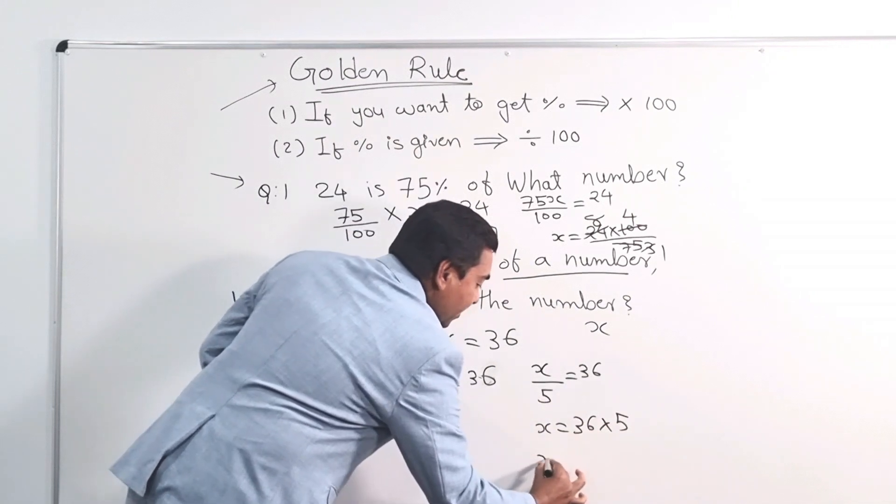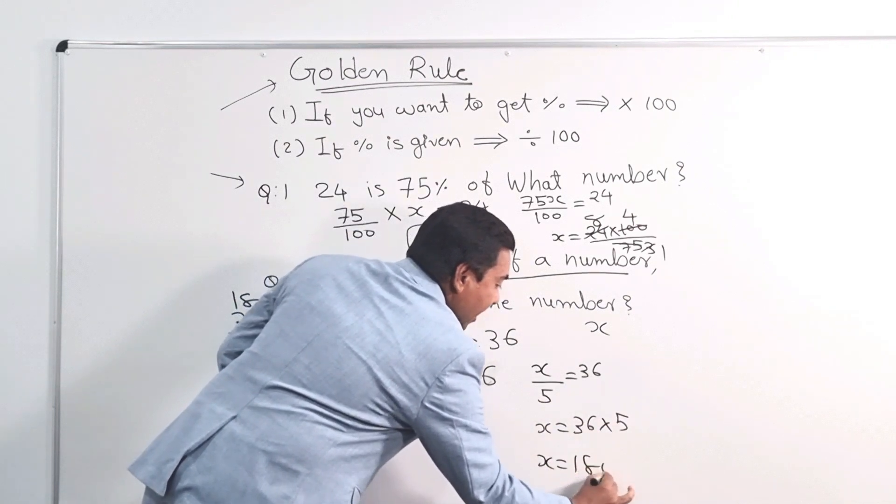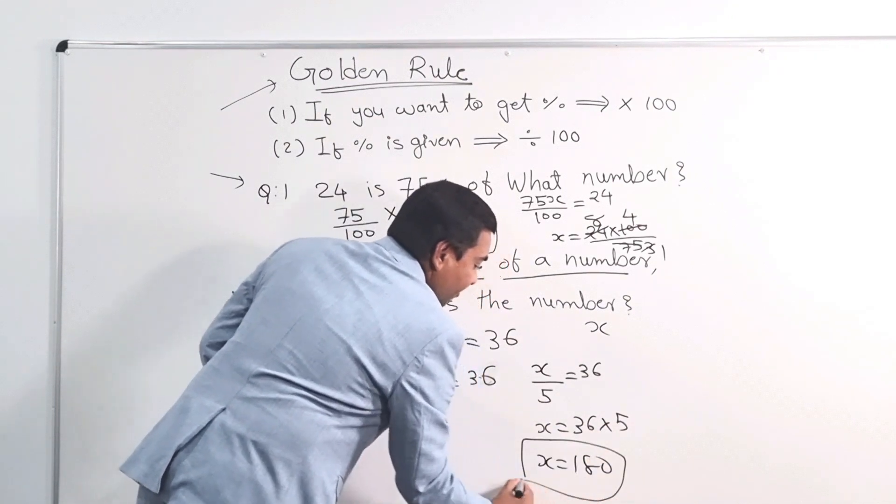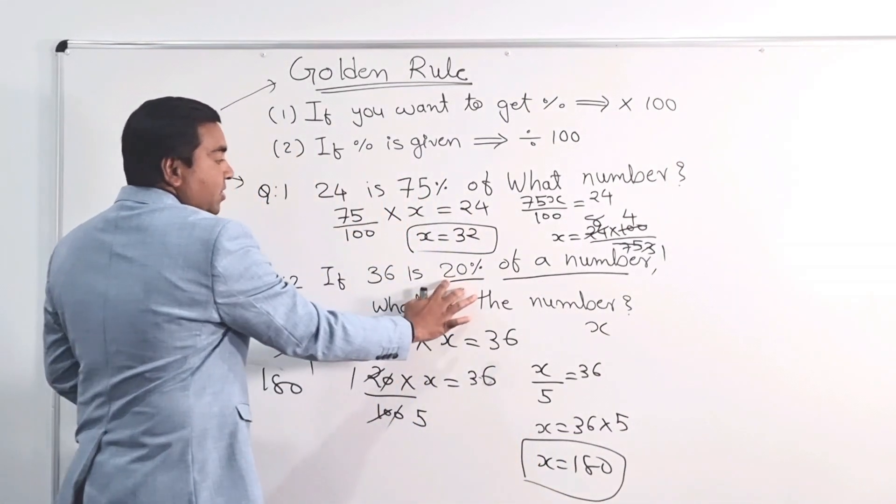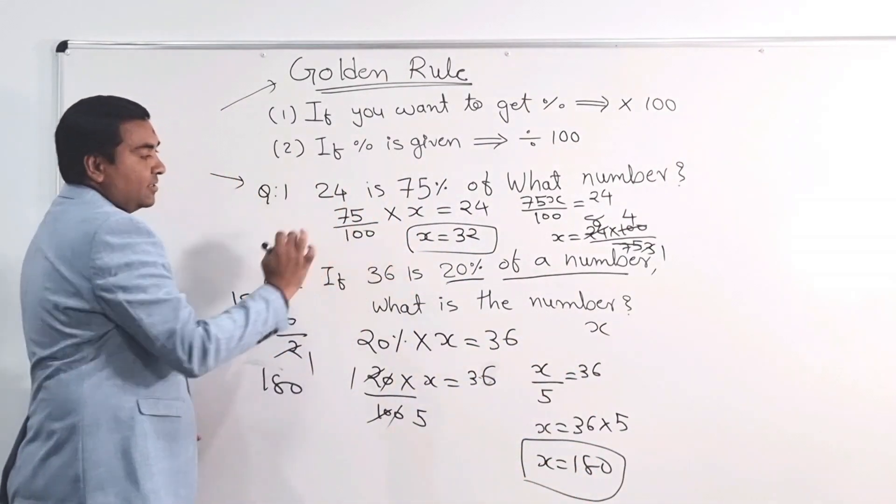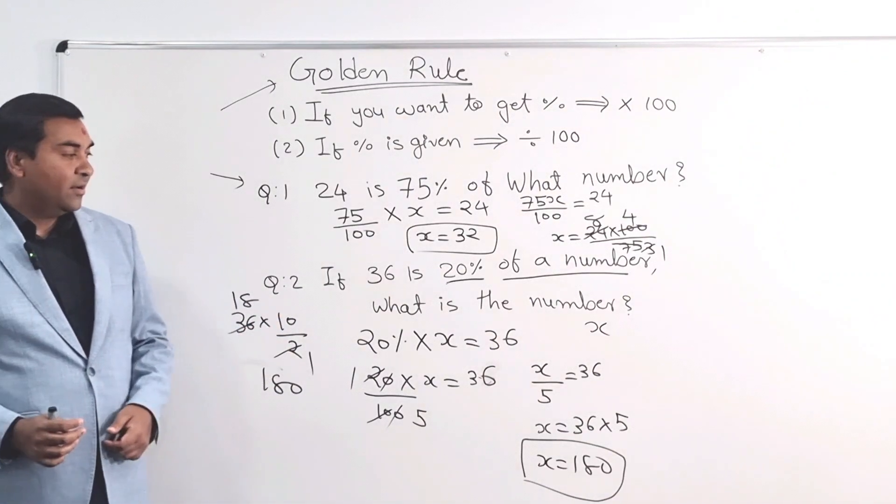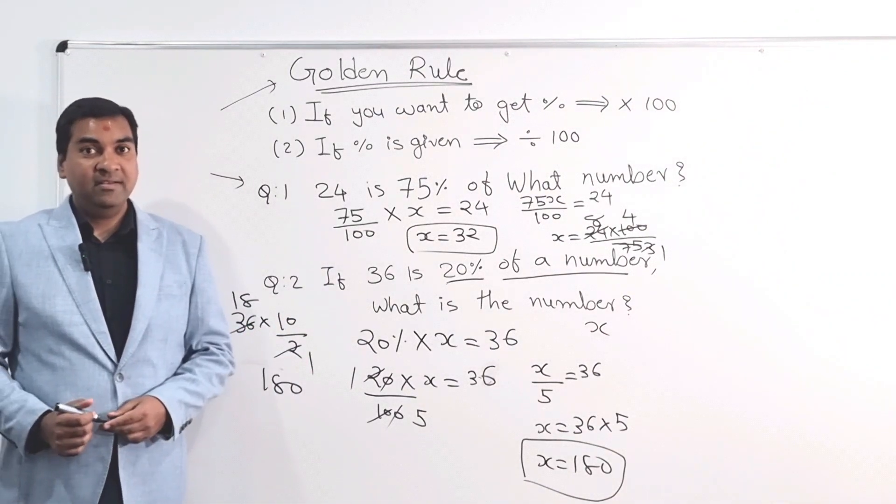So 36 times 5 is going to be 180, which is your final answer. So 20% of 180 is 36. And that's how you can solve the problem. Thank you.